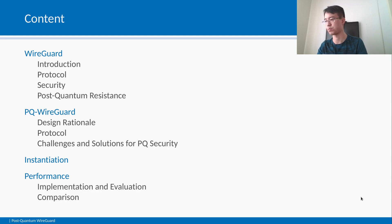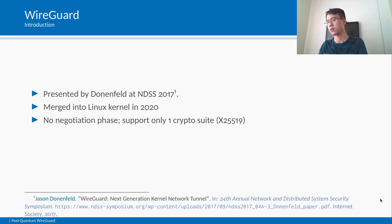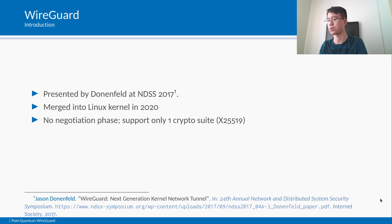Afterwards, we present our instantiation, the PQ WireGuard protocol, and its performance. WireGuard is a VPN protocol presented by Donenfeld at NDSS 2017 and was merged into the mainline Linux kernel in 2020. It's a simple protocol with an opinionated choice of cryptography. Supporting only one crypto suite avoids a negotiation phase, which reduces the number of handshake packets and eliminates any potential negotiation attacks.